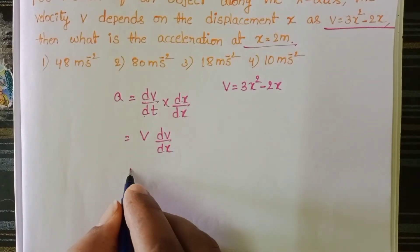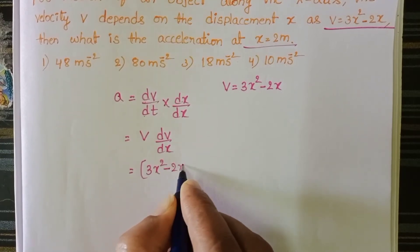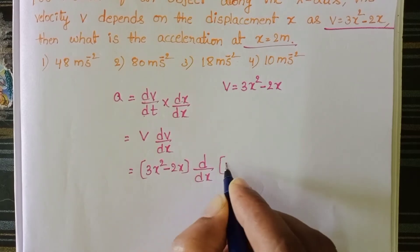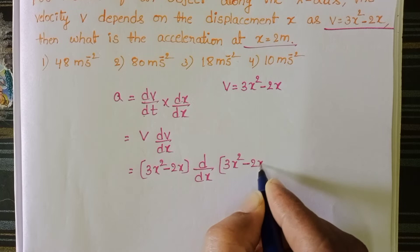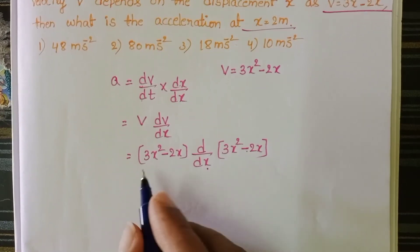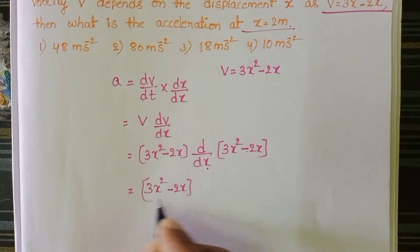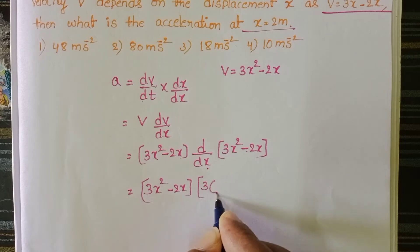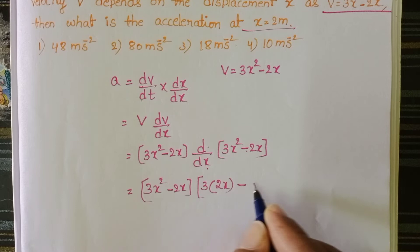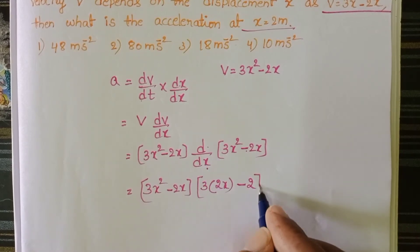Now in place of v, 3x square minus 2x into d by dx of 3x square minus 2x. Differentiate velocity with respect to x. 3x square minus 2x into 3 is constant, d by dx of x square 2x minus 2 is constant. dx by dx equals 1.